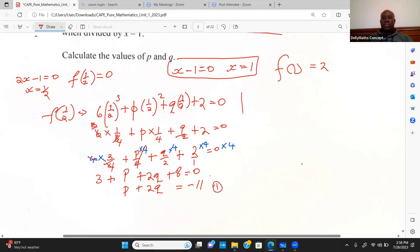What I need to do is get the second equation. I'm going to evaluate f of 1, understanding the remainder is going to be 2. I'm going to have 6 times 1 to the 3rd plus p times 1 squared plus q times 1 plus 2, and this is equal to 2 because the remainder was 2.